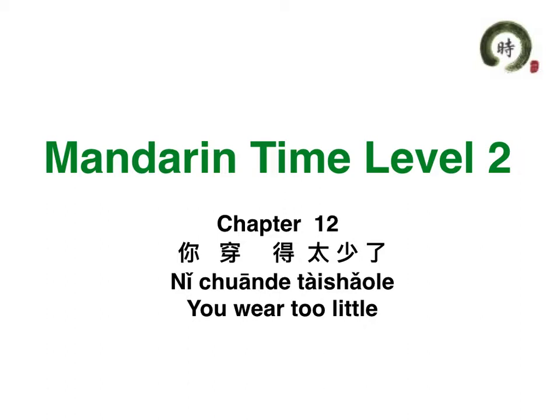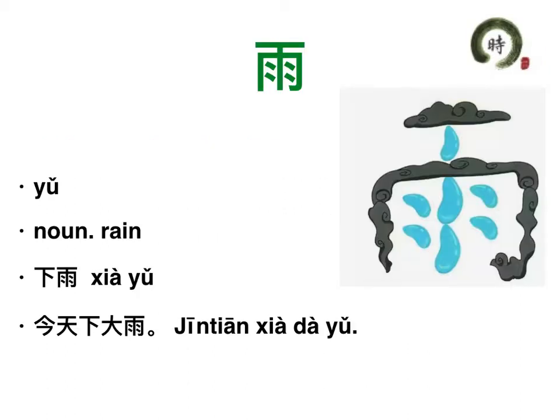首先我们看第一个词。The first word is 雨. Do you remember? We have learned it in a previous chapter. It means 'rain.' 雨. It rains — we can say 下雨. We use 下 as a verb. 下雨. 今天下大雨 — it rains heavily today. 今天下大雨。